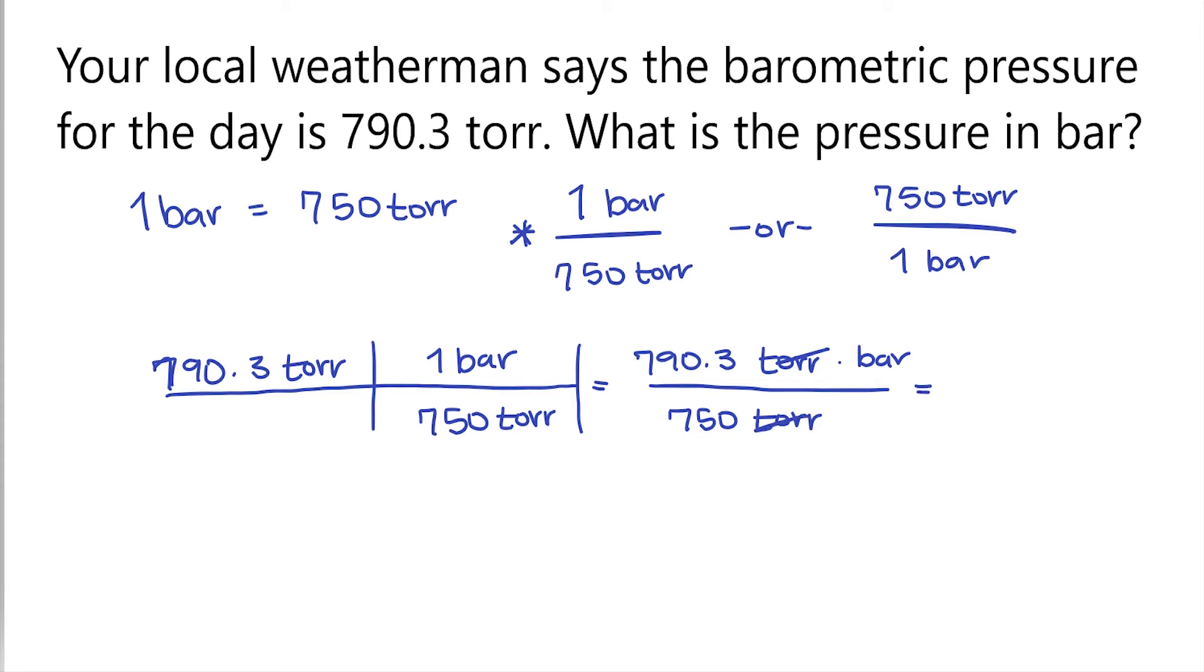So next we have 790.3 divided by 750, and this comes out to be 1.05, and then our units will be bar.